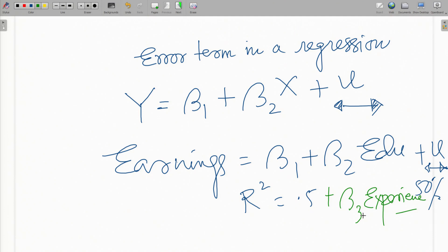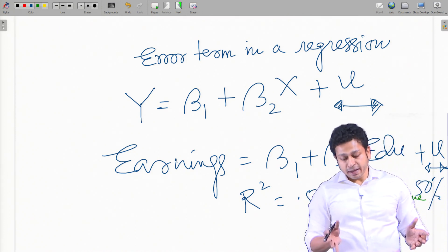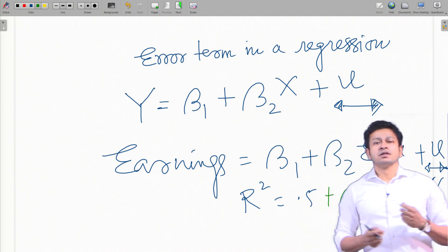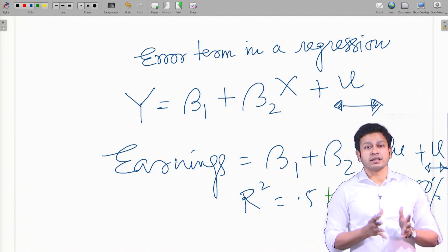But there are so many other variables which may actually influence earnings, but you will not have the way to capture them. For example, it could be my talent—there are so many talents I have which are influencing my earning and that cannot be captured by education or by experience. There could be other variables like my family background, my social network. All these things matter in terms of getting a job but cannot really be accounted for in this equation.